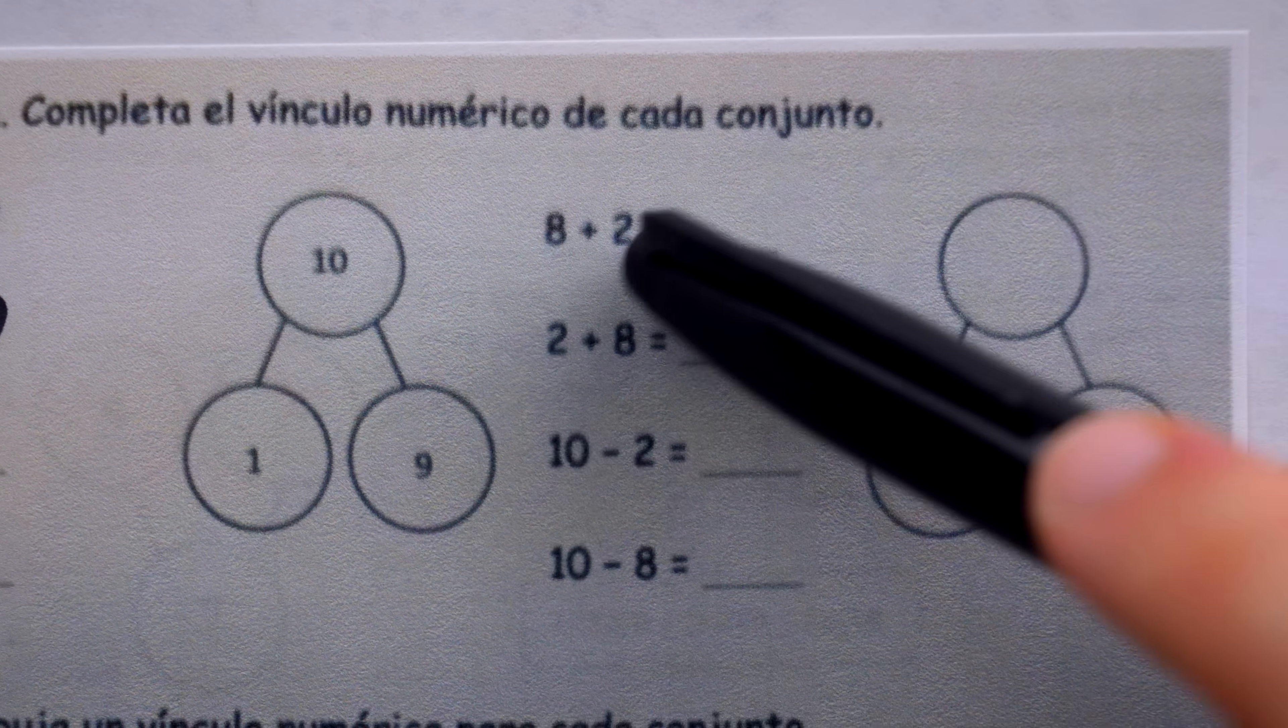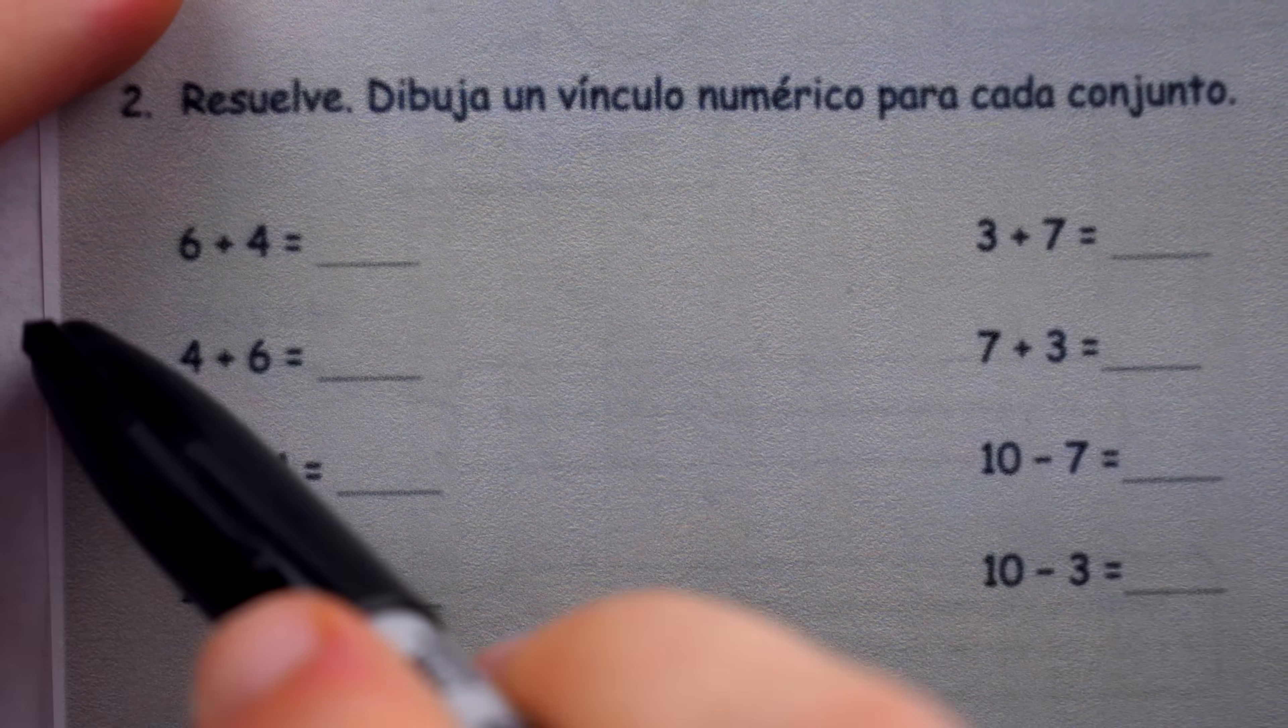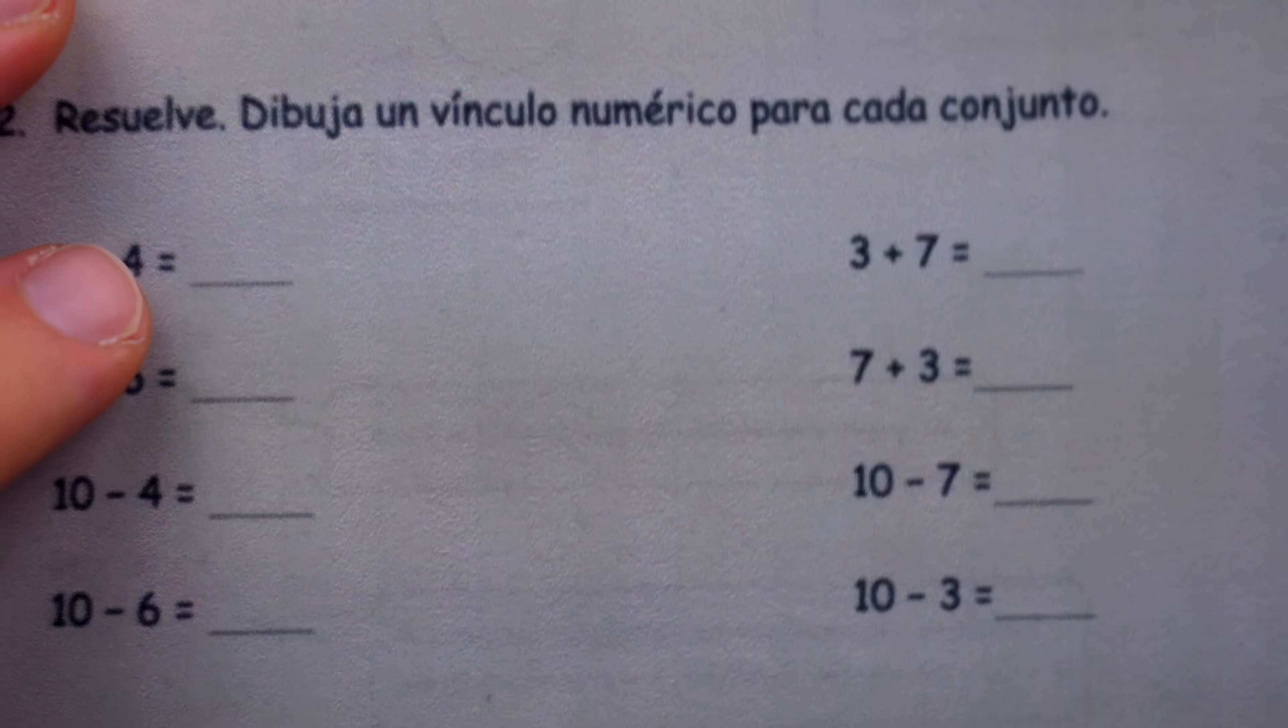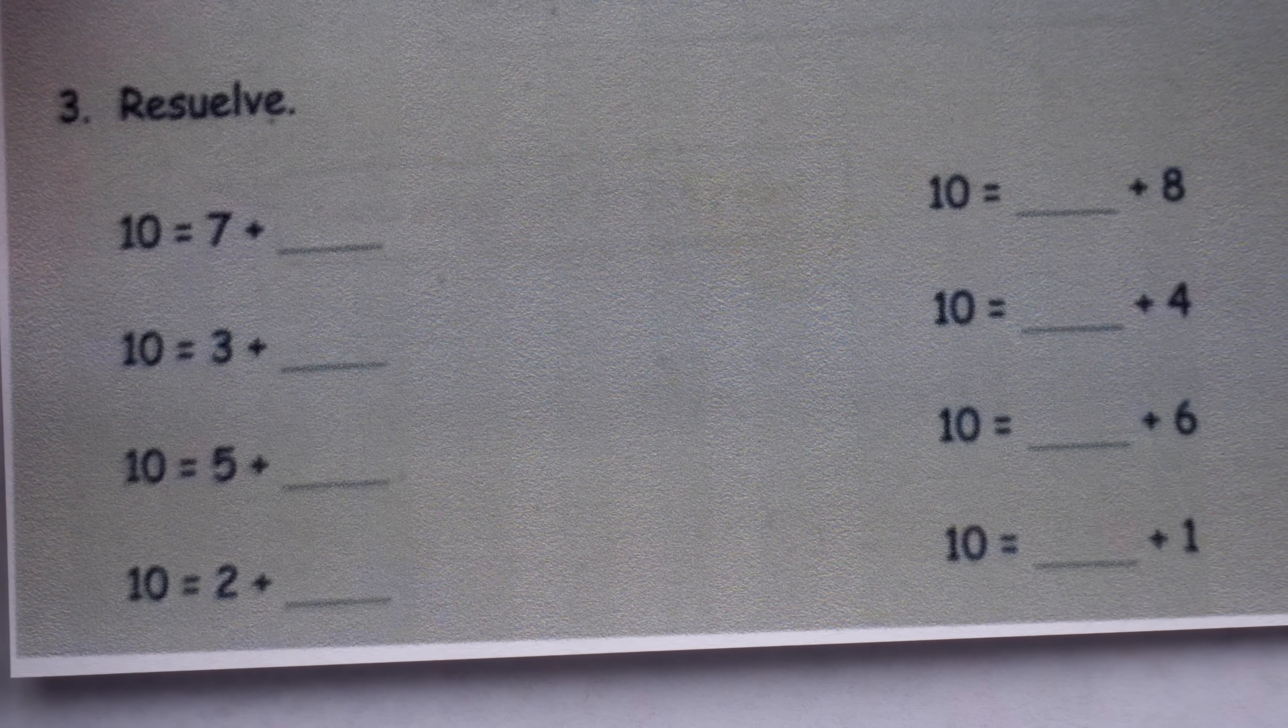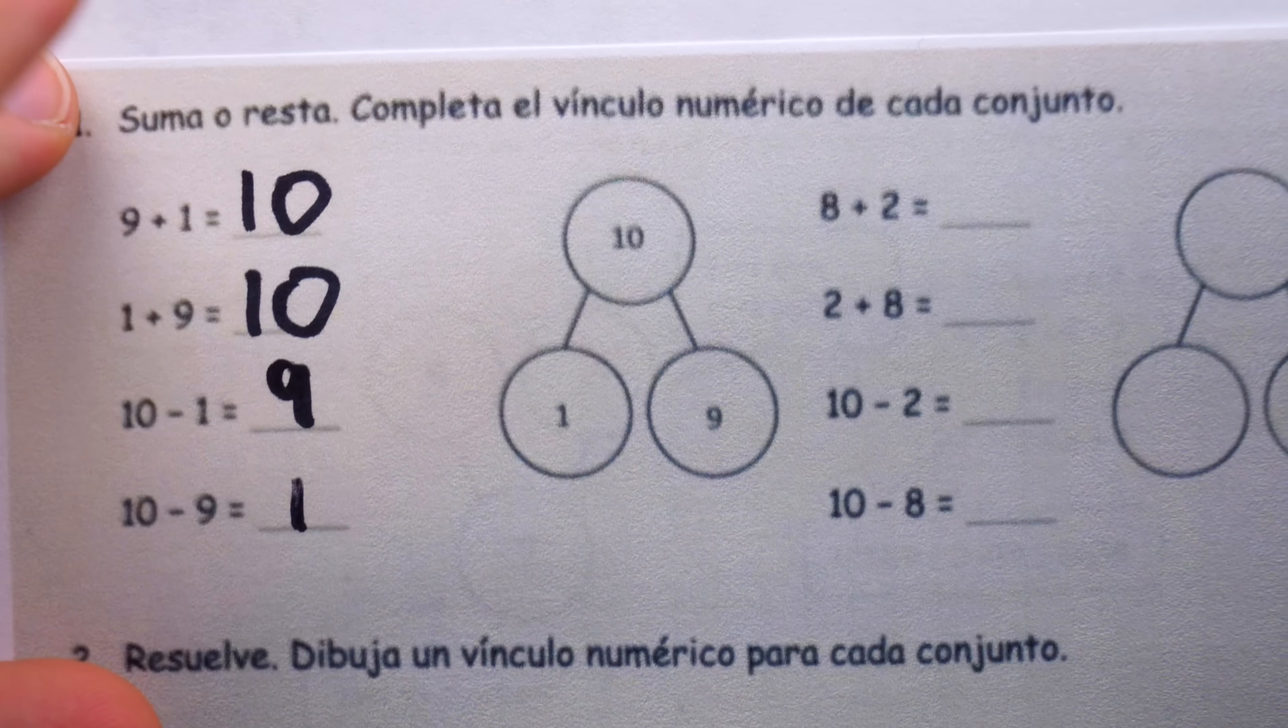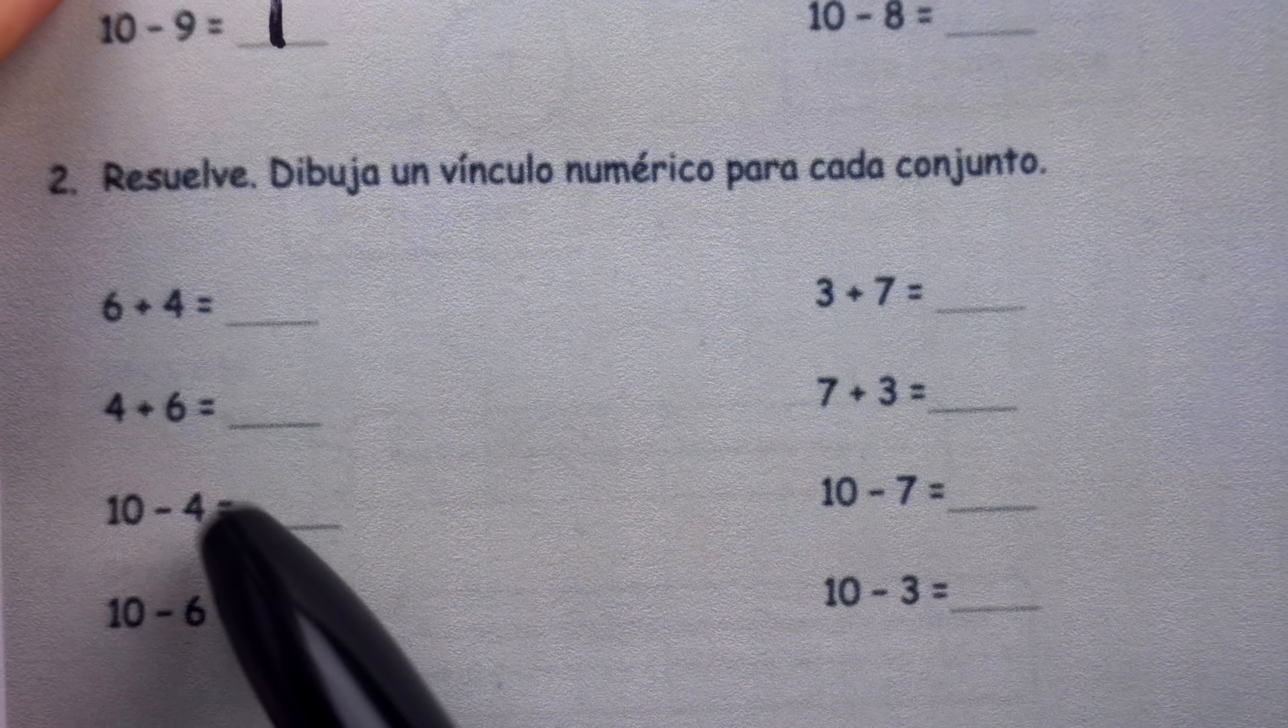Over here the student's supposed to do the same thing but fill in the diagram. Over here they have to do the same thing again but now create the diagram themselves. And then it seems like we just finish with some arithmetic problems that don't involve diagrams at all. The previous two problems specifically say to either complete the figure or to draw one yourself.